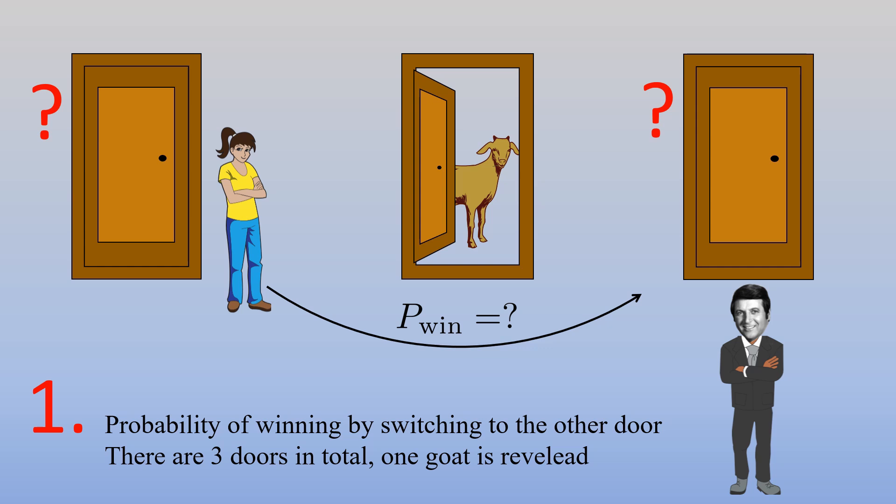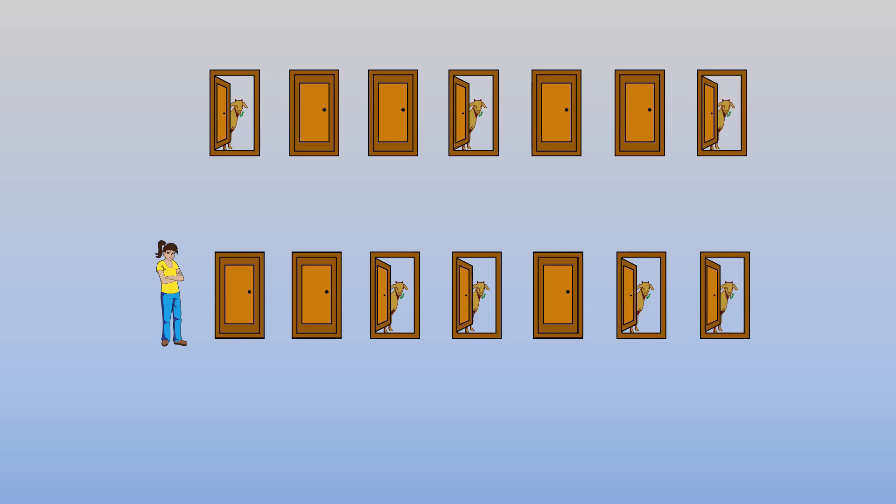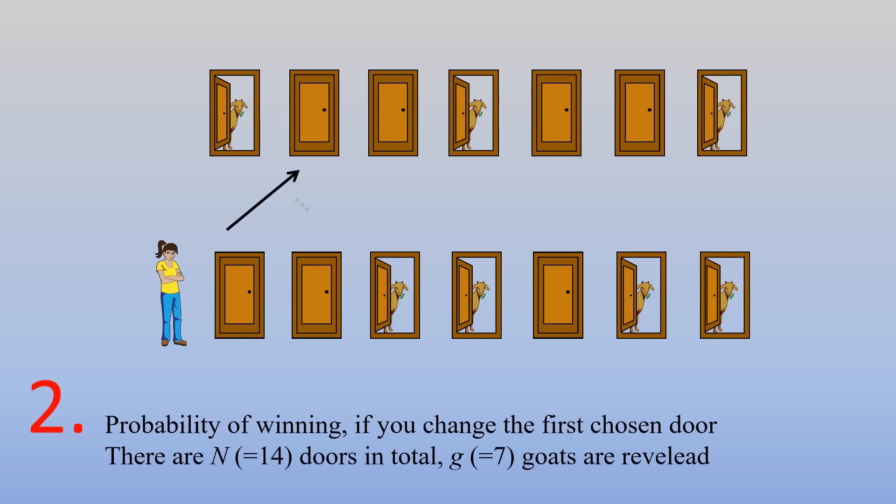Now, in the second question, we are going to generalize this question and extend the number of doors to N doors. We now have N doors and the host opens G doors. In the figure shown here, N is 14 and G is 7. The question is the same. What is the probability of winning the car if you switch to one of the remaining doors when the goats are revealed?